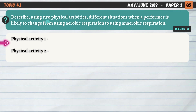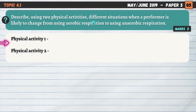Next question, also on 4.1: describe, using two physical activities, different situations where a performer is likely to change from aerobic to anaerobic respiration. It's about the intensity of the exercise being performed. If something is low intensity, we can meet energy demands using aerobic respiration. But when intensity increases, aerobic respiration can no longer meet the energy demands, so anaerobic respiration needs to come in and produce some additional energy.